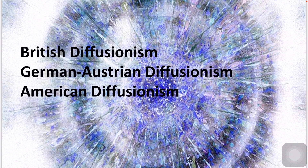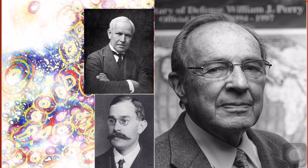The main spokesmen for the British school of Diffusionism were Elliot Smith, William J. Perry, and W. H. R. Rivers. This group presented the most extreme form of Diffusionism.